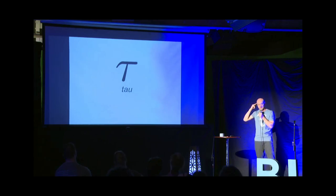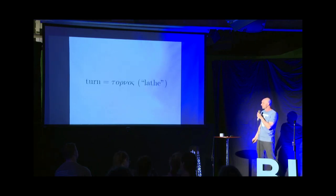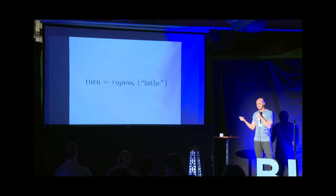It kind of looks like pi. It made me think of a circle constant. I started using it just on my own to see if it worked, and I liked it. And later on, I found, in fact, that the word turn is derived from the Greek word tornos, which means lathe. So you can see there's our tau right there.